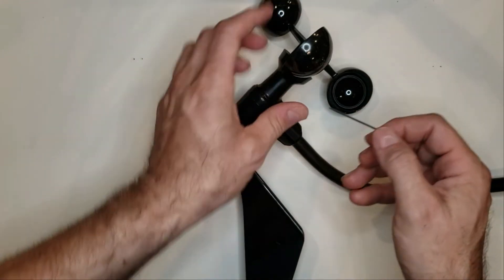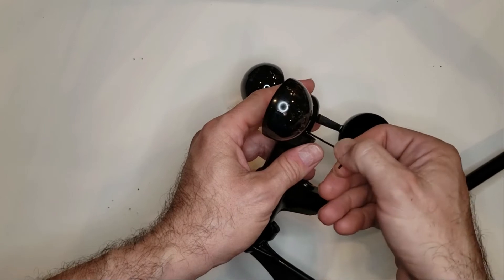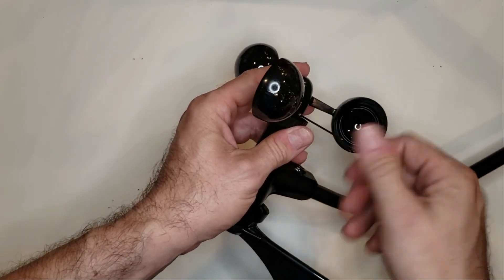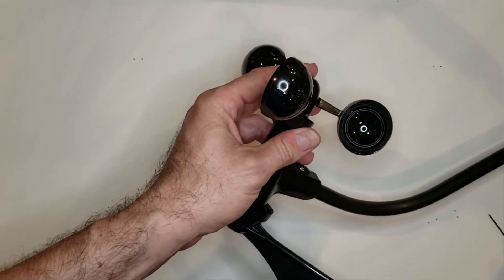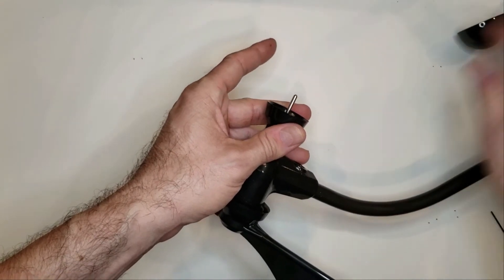So we want to first remove our wind cups. Turn it counterclockwise until it's not grabbing anymore. Simply pull them off. Set them to the side.